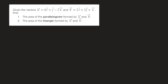We're given two vectors: the first is a, which is 6i plus j minus 2k, and the second is b, which is equal to 2i plus 3j plus k. The first thing we're asked to do is find the area of the parallelogram formed by the vectors a and b. The formula for the area of a parallelogram tells us that the area equals the magnitude of the vector product of the vectors a and b.